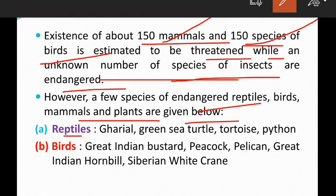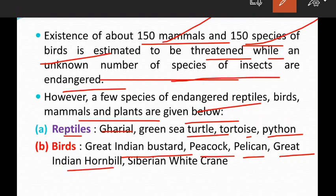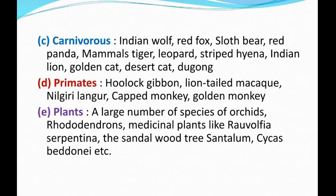Reptile numbers show gradual decrease. Endangered reptiles include gharials, green sea turtles, tortoise, and python — reptile numbers continue to decrease and protection is needed. Endangered birds include the Great Indian Bustard, peacock, pelican, hornbill, Siberian white crane.